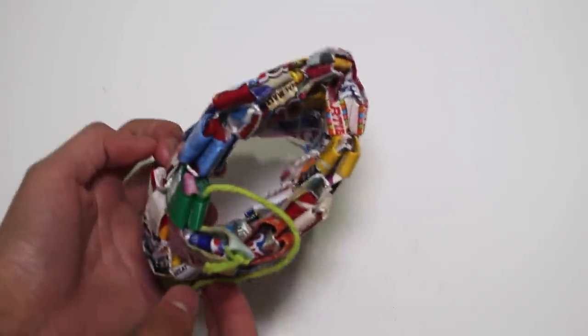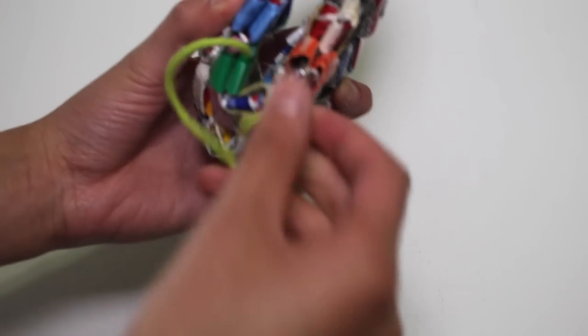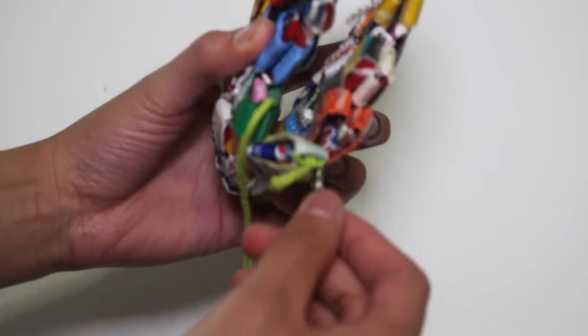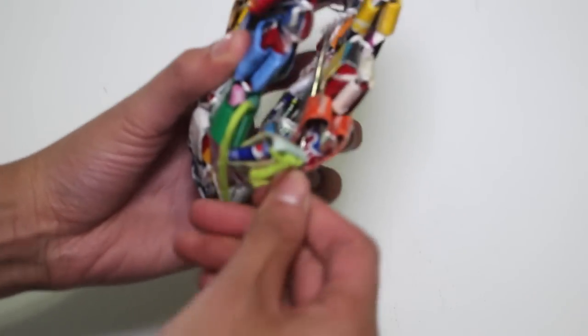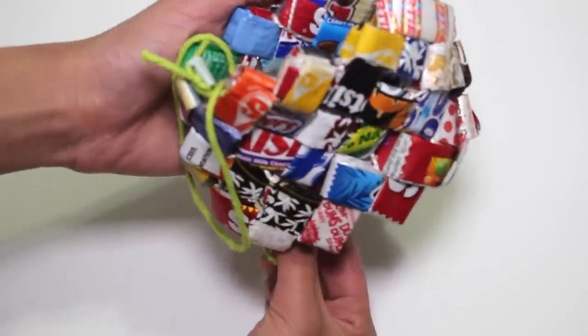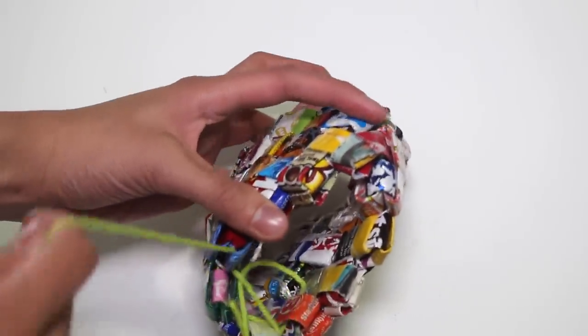Well, I ran out of thin string, so I'll just show you with yarn. Start by tying the string to one link and move from side to side sewing through the inside holes of the links. The pattern for sewing the bottom is making X's or zigzags through the inside holes of the links.